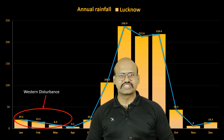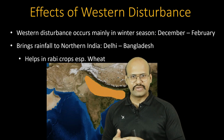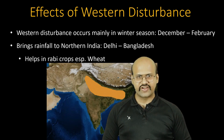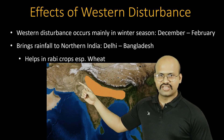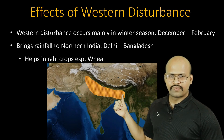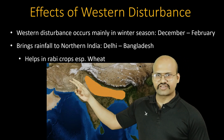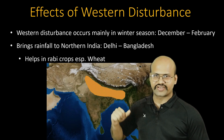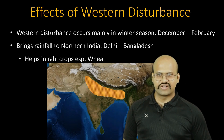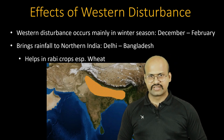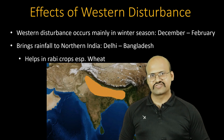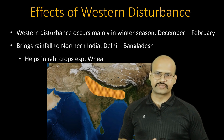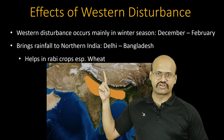Western disturbances generally occur from mid-December to mid-February and affect regions right from Delhi to Bangladesh, including western Punjab and even parts of Pakistan. The rainfall brought by western disturbances helps rabi crops, especially wheat crops.